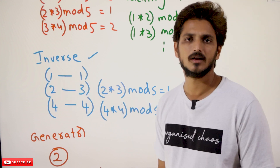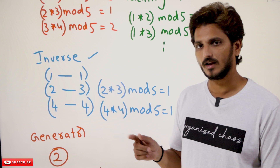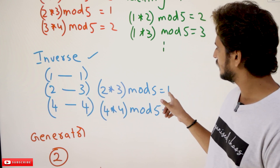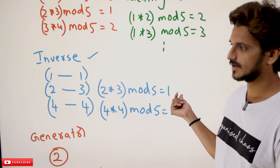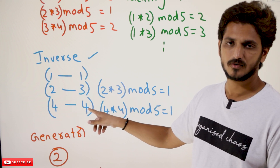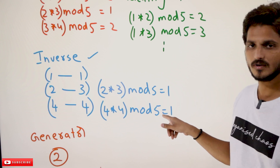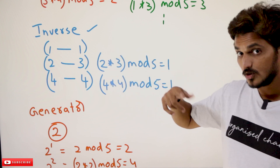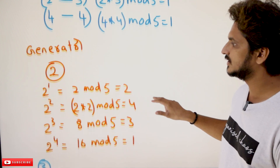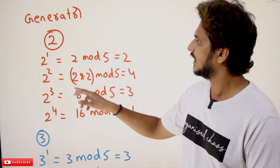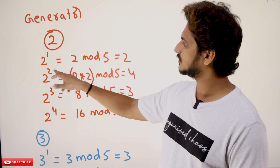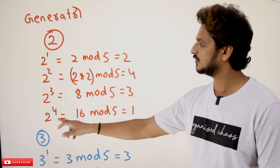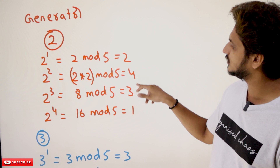The inverse of 1 is 1, since 1 × 1 mod 5 = 1. Now we need to check for the generator. Is there any generator here? Yes, 2 is a generator. 2^1 mod 5 = 2; 2^2 = 4 mod 5 = 4; 2^3 = 8 mod 5 = 3; 2^4 = 16 mod 5 = 1. We generated all the elements: 1, 2, 3, 4.